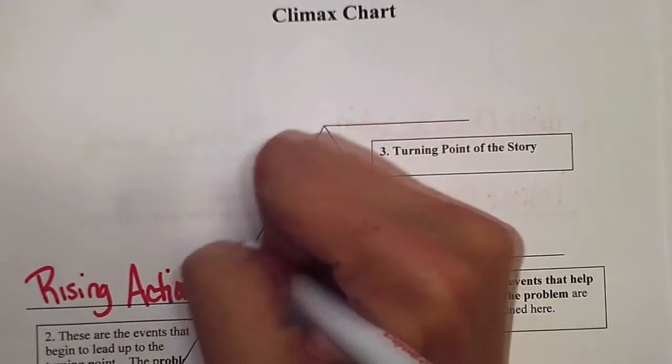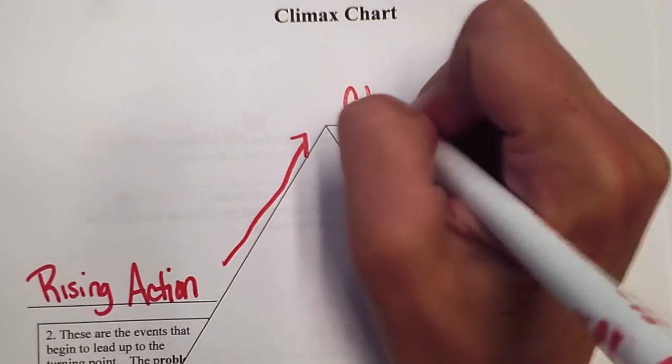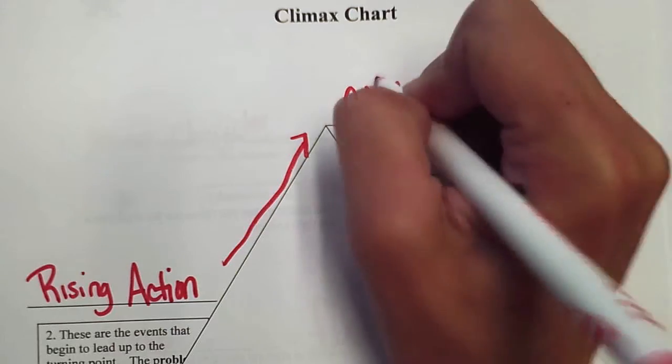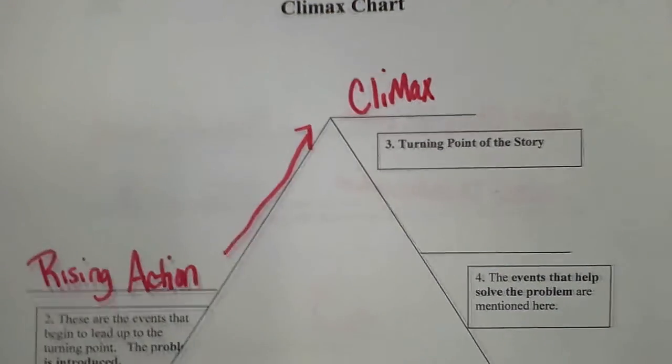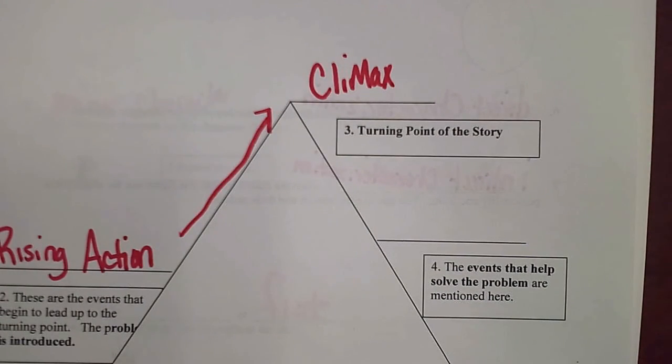The turning point is the high point of the story, and this is what we call the climax. Now I just want to say - I know my chart only shows one high point or climax, but in a full-length novel you may have more than one climax. For example, The Outsiders has more than one climax in the story.